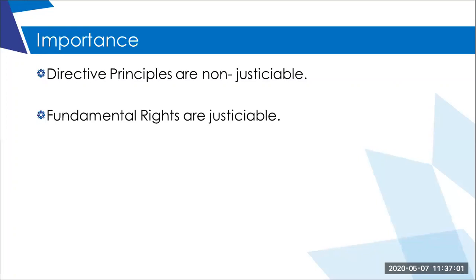The Directive Principles are in the nature of a pledge made by the framers of our Constitution. They provide a framework of political, social, and economic program for a modern democratic state. These guidelines are given to the government so that it can make laws and draft policies according to these fundamental principles, as they summarize the objectives of our Constitution. They give an element of permanence in our democracy — if the government accords its policies as per those principles, we can have permanency in our democratic system.